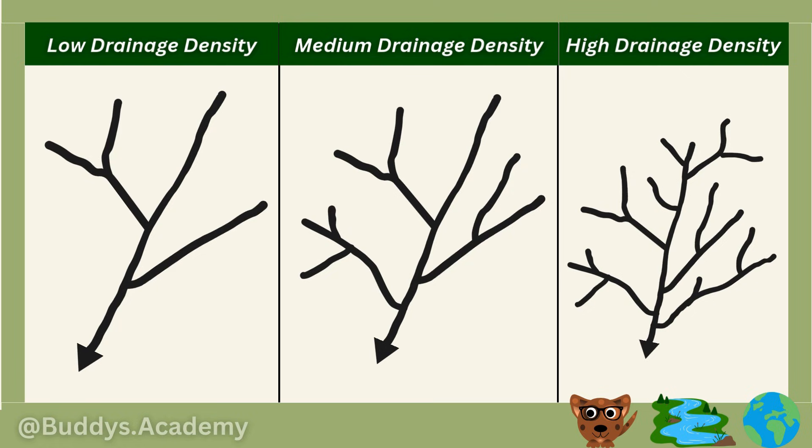If you look at the diagram in the middle, that's going to represent your medium drainage density. This one is going to show a moderate number of streams that are going to be evenly spread out. That's going to represent a balance of water soaking into the ground and water that's going to be flowing on the surface.